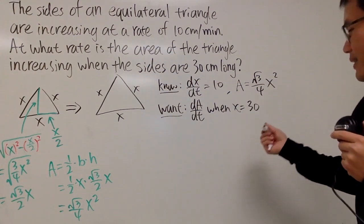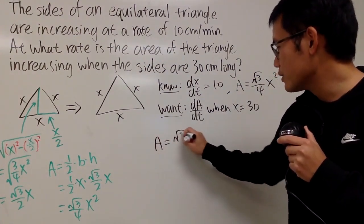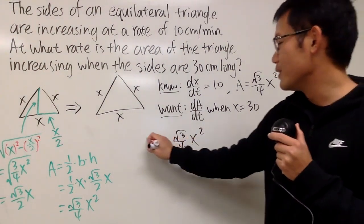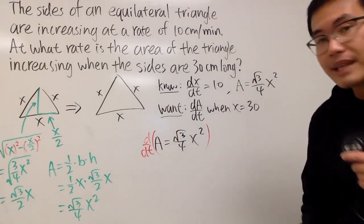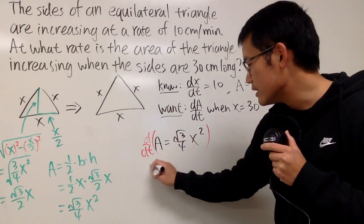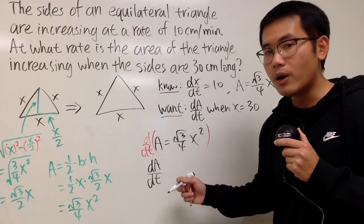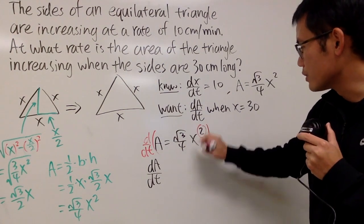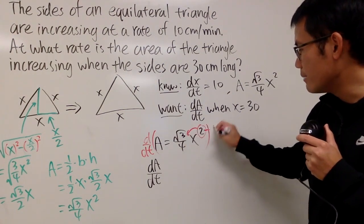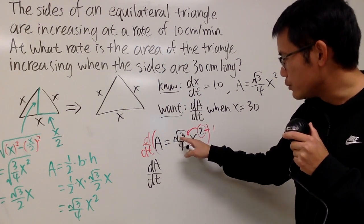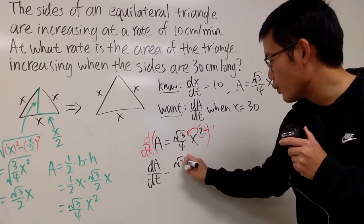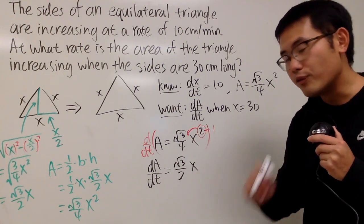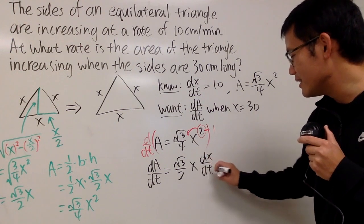Okay. With this being done, let me just write this down. A equals square root of 3 over 4 X squared, like this. Of course, do our derivative so we can get our rate equation. The left-hand side is exactly dA/dt, and that's exactly what we're looking for. For the right-hand side, first of all, this is just a constant multiple. I will just look at X to the second power. Bring the 2 to the front and minus 1. Square root of 3 over 4 times 2 is just going to be square root of 3 over 2. And then we have the X to the first power. And don't forget the dx/dt, like this.